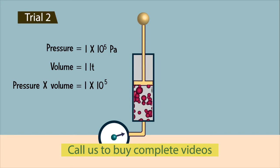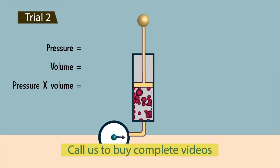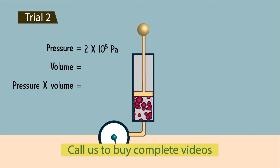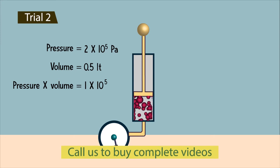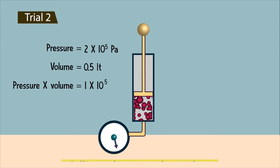Now conduct the second trial. In this trial, double the pressure of the gas to 2 × 10⁵ pascals. Measure the volume of gas — it is 0.5 liter. Calculate the product of pressure and volume: it is 1 × 10⁵.